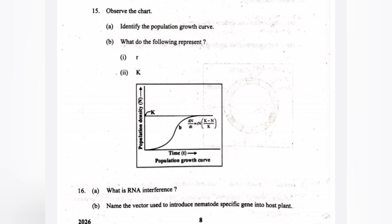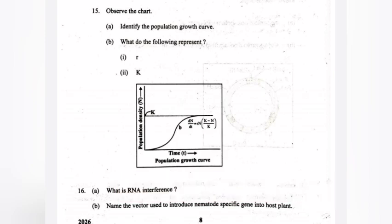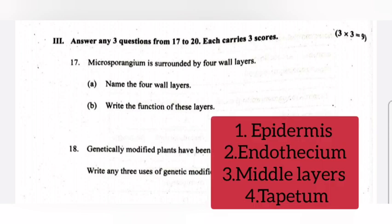Answer: Agrobacterium tumefaciens. Question 17: Microsporangium is surrounded by four wall layers. A - Name the four wall layers. Answer: 1) Epidermis, 2) Endothecium, 3) Middle layer, 4) Tapetum.